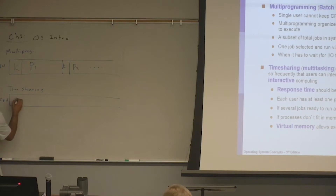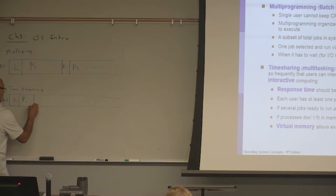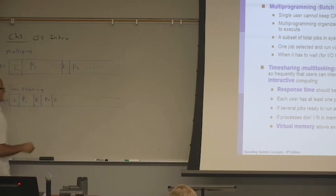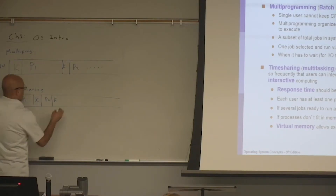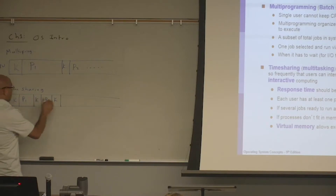With time-sharing, we have the kernel, then P1, and the kernel is not going to wait for P1 to request I/O. At some point it takes the CPU from P1 and gives it to P2. Then the kernel gets the CPU again and possibly gives it to P1, P3, or some other process.